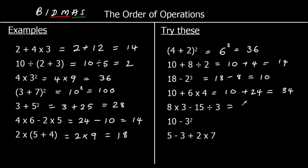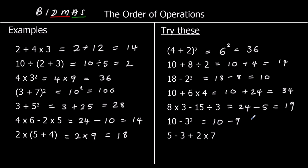The next one: no brackets, no indices, but we've got division and multiplication. We'll do them at the same time. We've got 8 times 3, which is 24, and 15 divided by 3, which is 5. So 24 take away 5 is 19. Next up: no brackets, but we've got indices. 3 squared is 9, so we have 10 take away 9, which is 1.